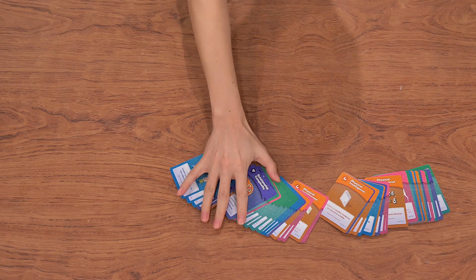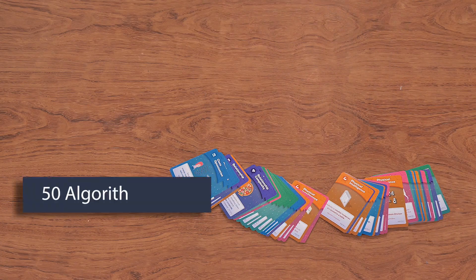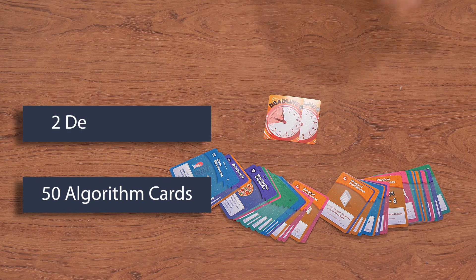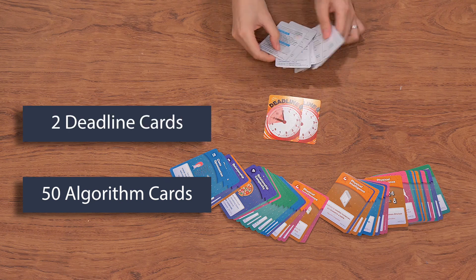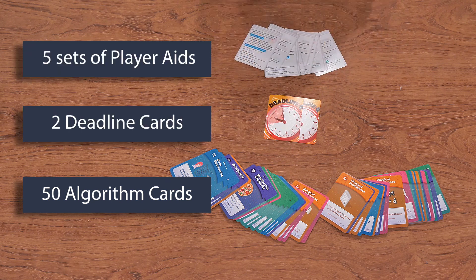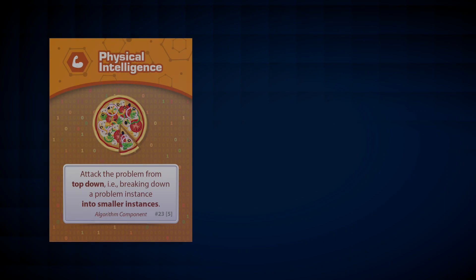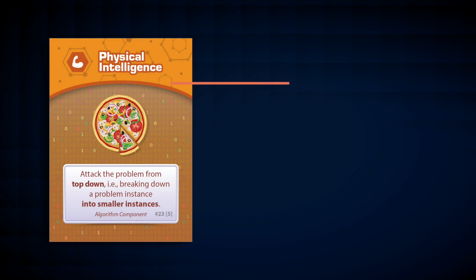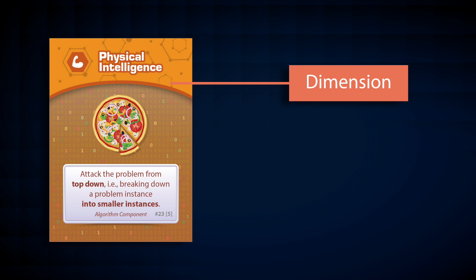Second, cards. There are a total of 52 cards in the game, including 50 algorithm cards, two deadline cards, and there are five sets of player cards. Each algorithm card contains two attributes. The color represents the dimension of the card, corresponding to the five dimensions on the main board. For example, this card is orange, so it represents the orange dimension, physical intelligence.